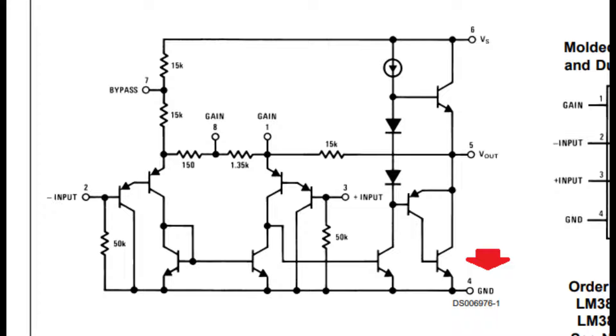So pin number 4 is just a regular overall ground for the circuit. You cannot use it as a negative input like you can with pin number 2.